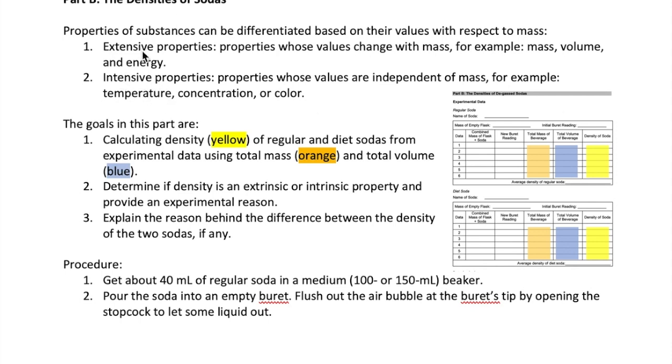The idea that we want to explore here is whether density is an extensive or intensive property. As a reminder, an extensive property is a property whose value changes when the mass of the substance changes. So for example, mass, volume, and energy are all extensive properties. An intensive property, on the other hand, is a property whose value stays the same even when the mass of the substance changes. Temperature, concentration, and color are all examples of this type of property.